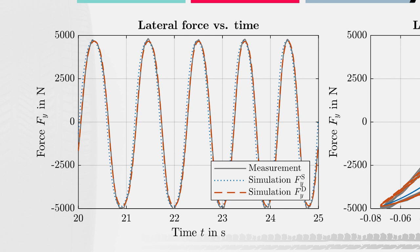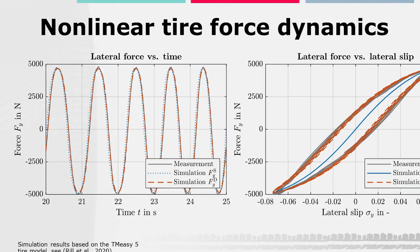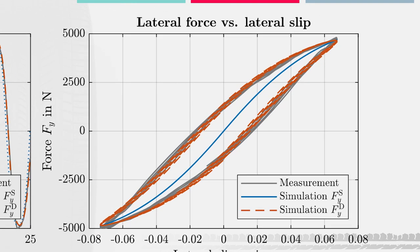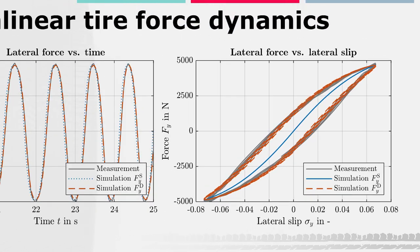There is a small time delay between the steady-state force and the dynamic tire force. Although this time delay is quite small, the computed dynamic force describes the measured tire force more accurately. When we look at the force response with respect to the lateral slip on the right side, the deviation is much higher. We can see the characteristic hysteresis behavior of the measured lateral tire force. In comparison, the steady-state tire force is shown in blue. Under such operating conditions, the description of tire force transmission by steady-state characteristics fails.